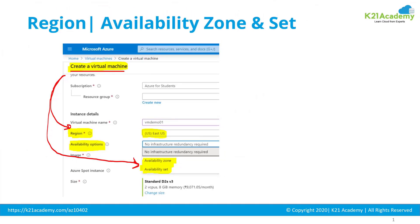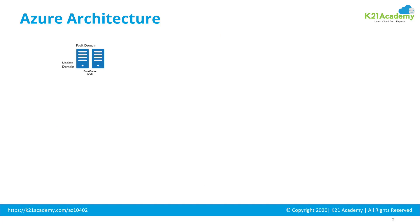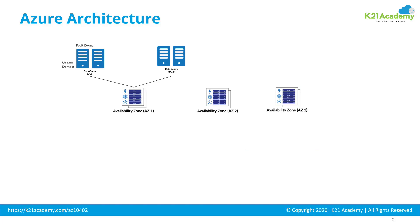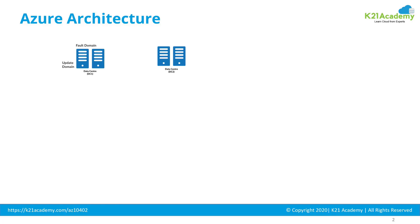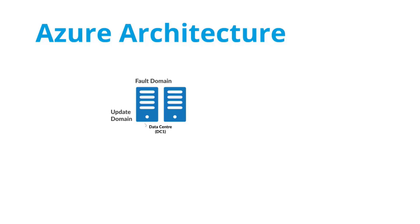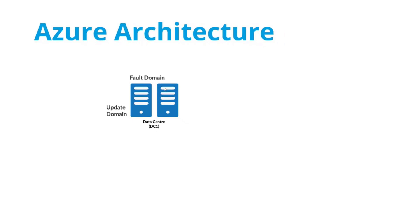Before I explain what availability zone or availability set means, let's first look at the architecture of Microsoft Azure. On a high level, you have a geography. Geography is made from multiple regions, and regions are made from one or more availability zones. An availability zone is nothing but a collection of data centers. Within a data center, you have server racks. Each server rack is called a fault domain. Within these server racks, you have servers — these are update domains. So this is update domain 1, update domain 2, 3, and 4 within this fault domain, and similarly in another fault domain.